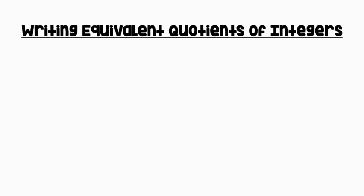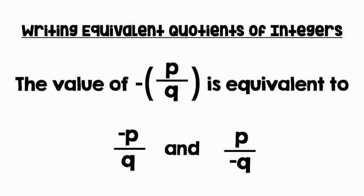Let's review what we've learned about writing equivalent quotients of integers. The value of negative (P over Q) is equivalent to negative P over Q and P over negative Q, where P is our numerator and Q is our denominator.